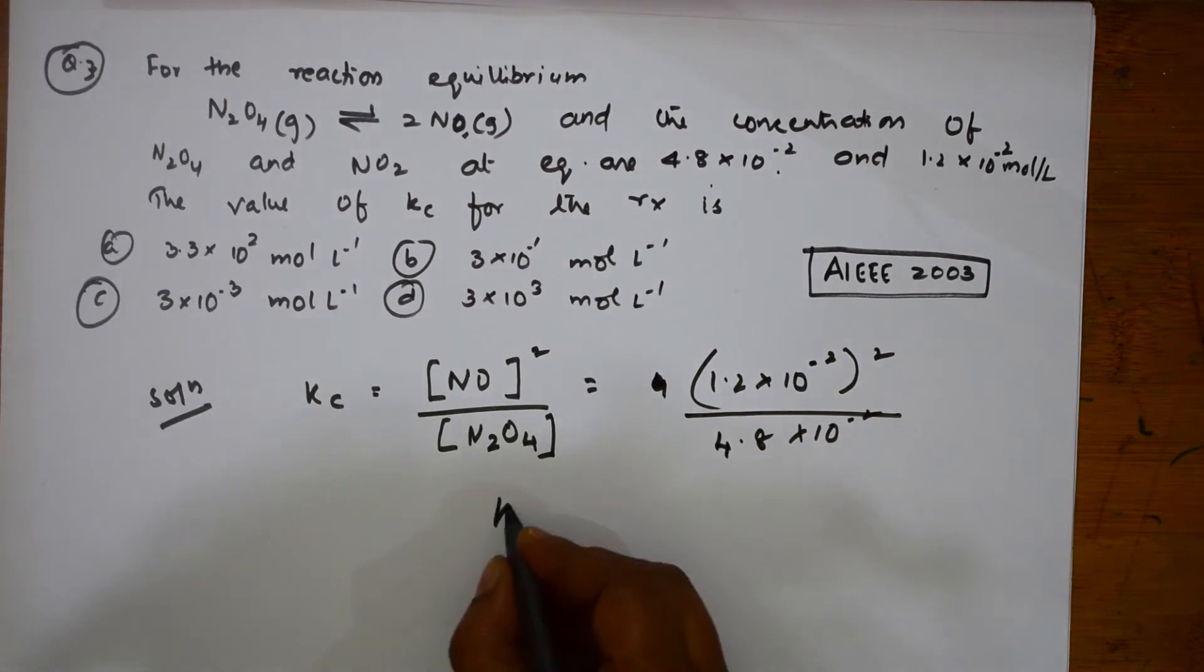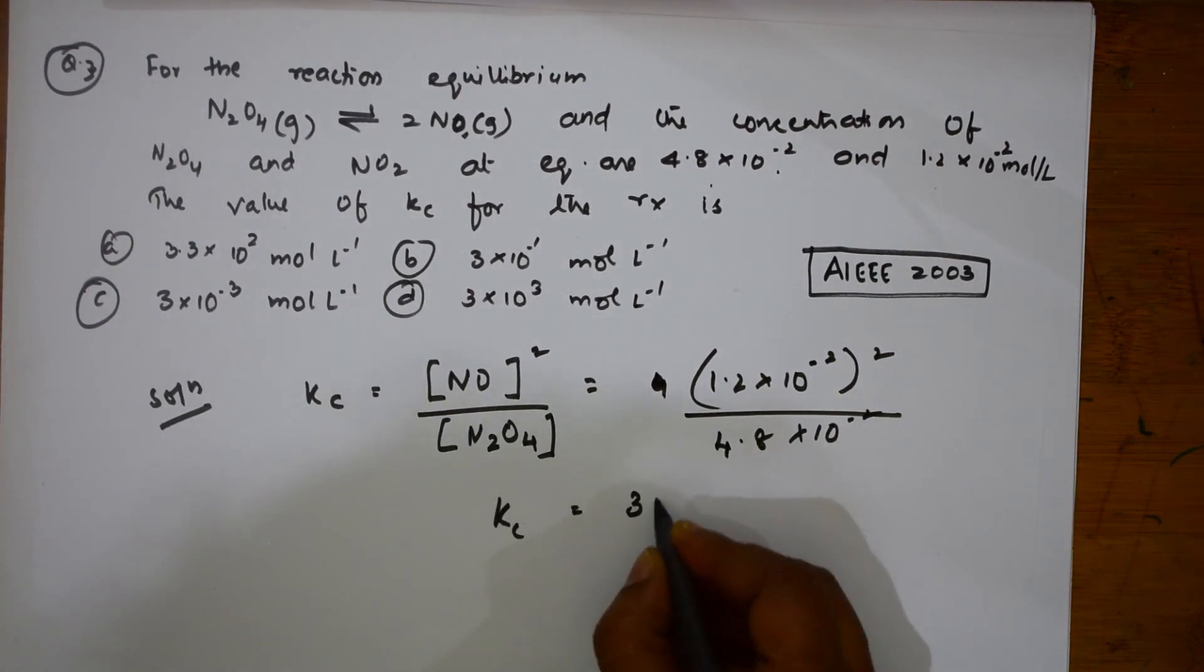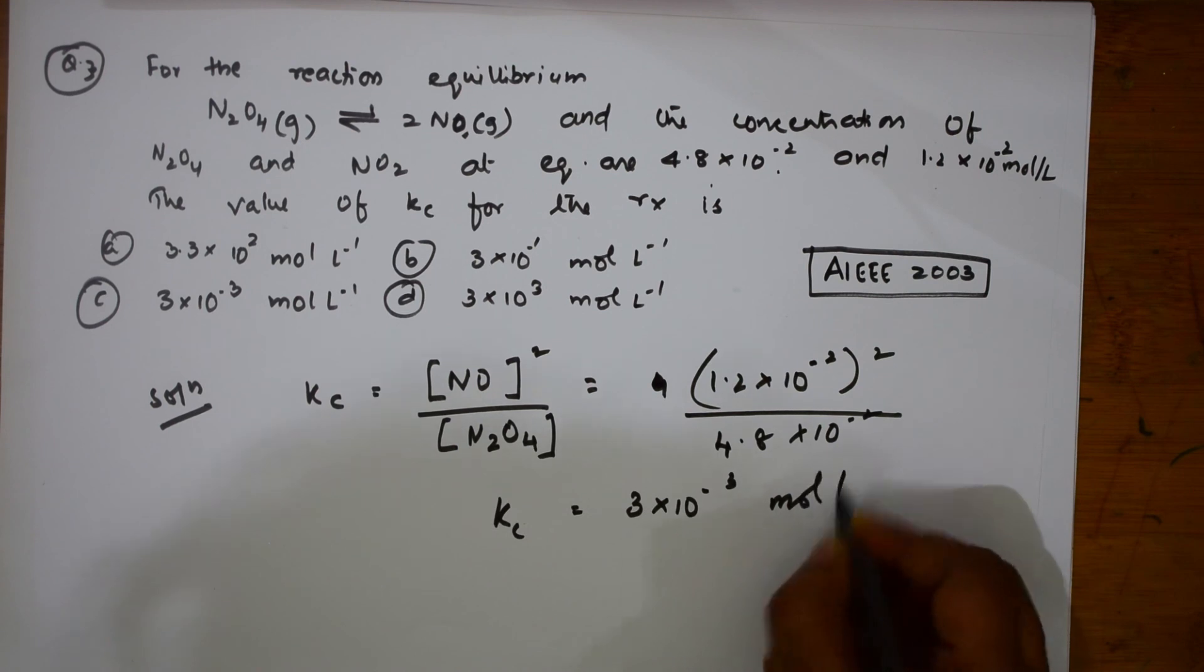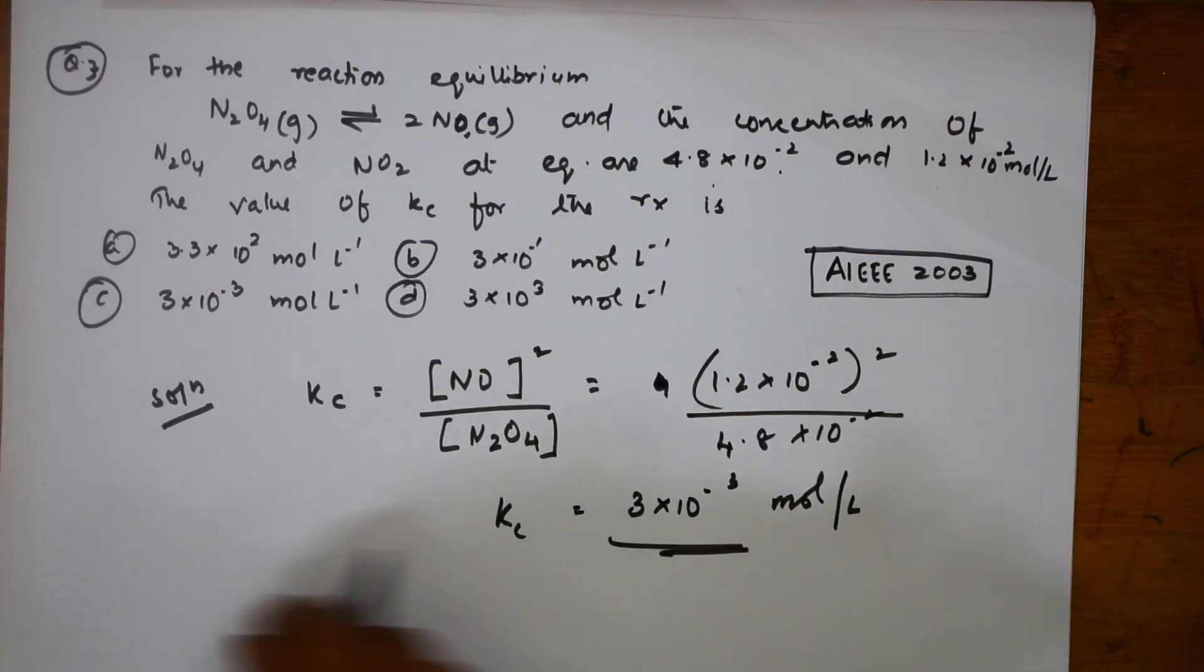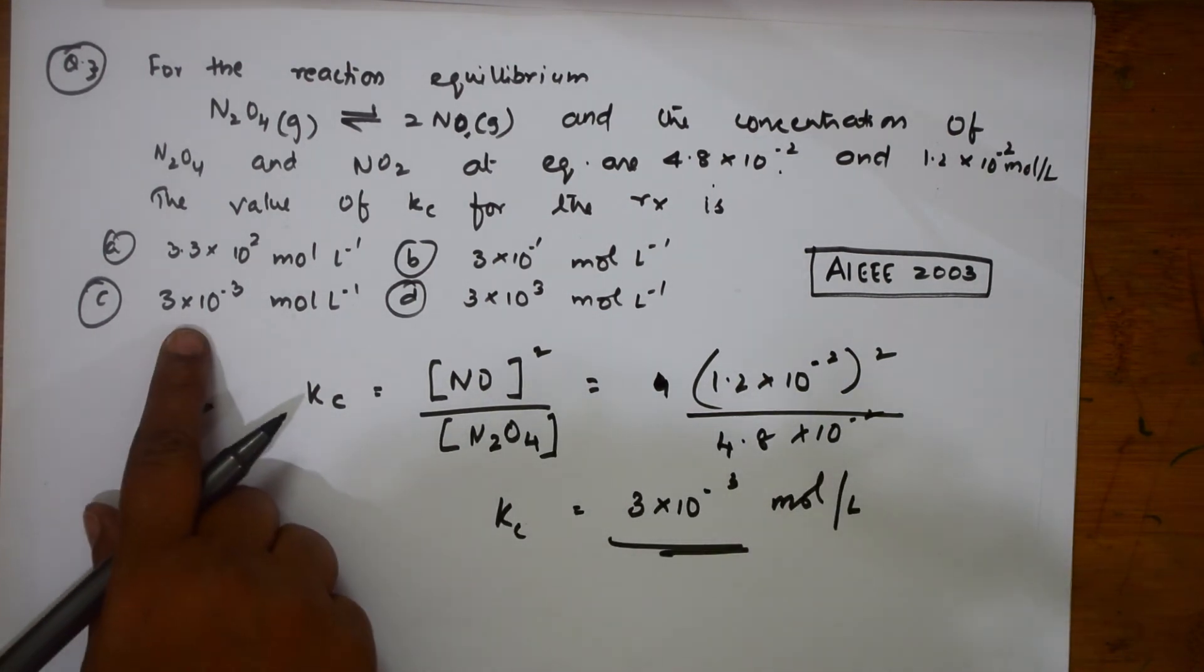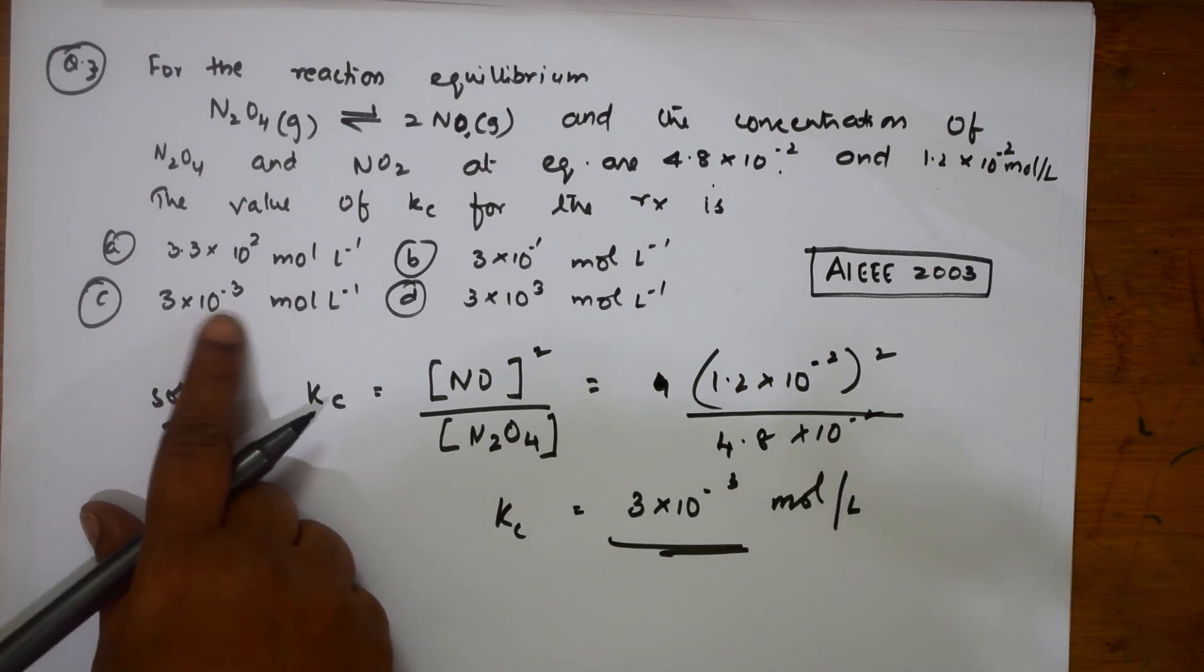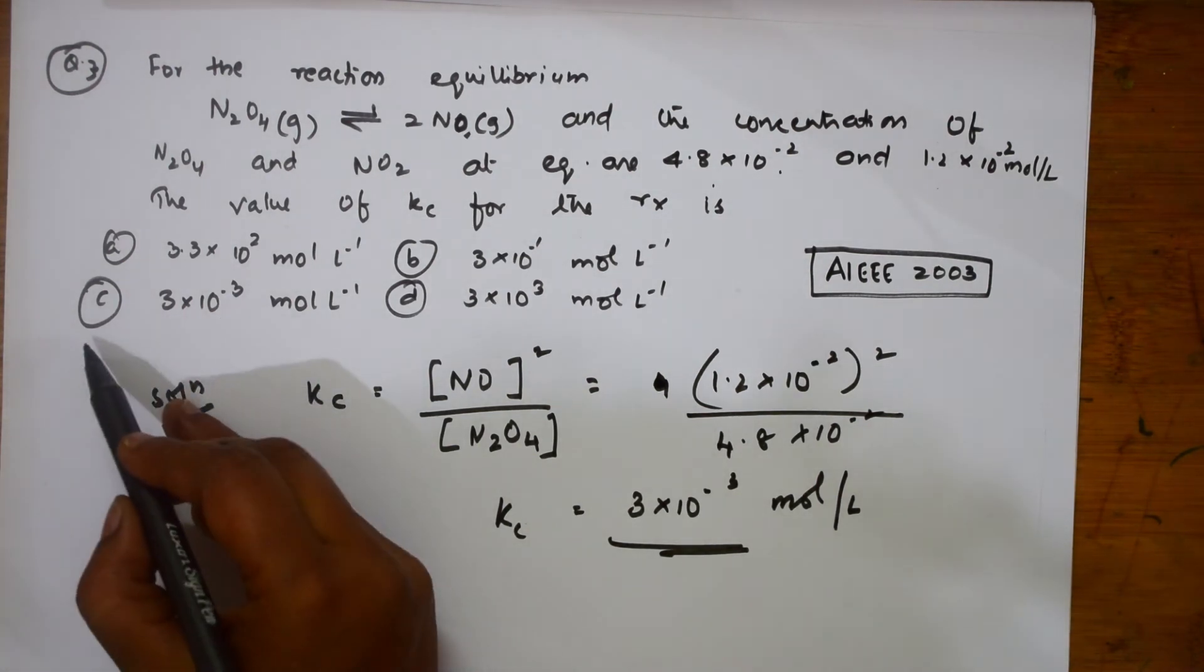When you take the ratio, Kc value you will get equal to 3 into 10 to the minus 3 mole per liter. This is the answer. When I have to take the correct answer, 3 into 10 to the minus 3 mole per liter. This is the correct answer.